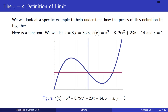So here's a function. I have f of x equals x cubed minus 8.75 x squared plus 23x minus 14. I've graphed on top of it the line x equals a, which is the vertical line, and the line y equals L, which is the reddish-purplish line going horizontally. This will be the framework we use to piece together what the epsilon-delta definition means.